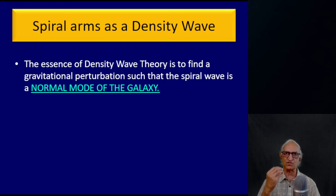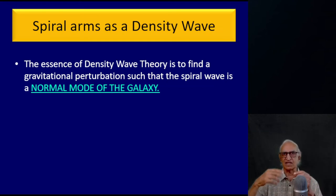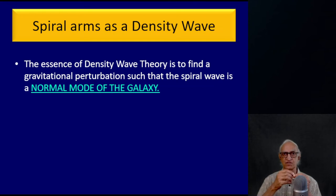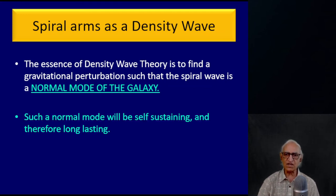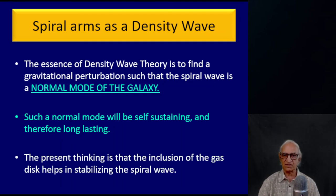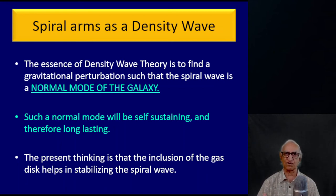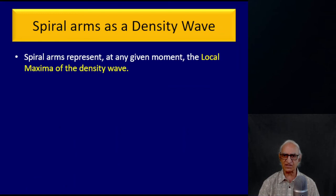The essence of the dynamical density wave theory developed by C.C. Lin and his collaborators is to find a gravitational perturbation such that the spiral wave is a normal mode of the galaxy. Why a normal mode? Because normal modes are long-lasting. If you pluck a string tied at two ends, it vibrates in all sorts of modes, but the modes that survive are the normal modes — corresponding to standing waves. Such a normal mode will be self-sustaining and therefore long-lasting. The inclusion of gas clouds in the disk helps in stabilizing the spiral wave.